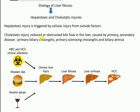The other cause is cholestatic injury, characterized by reduced or obstructive bile flow in the liver, caused by primary and secondary diseases such as primary sclerosing cholangitis and biliary atresia. So the two etiologies for liver fibrosis are hepatotoxic injury - caused by hepatitis B and C, chronic infections, western diets, alcohol abuse - and cholestatic injury. The stages of liver injury are: chronic liver injury, followed by liver fibrosis, then liver cirrhosis, and finally hepatocellular carcinoma.